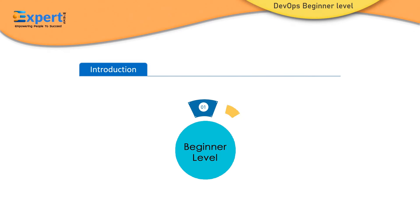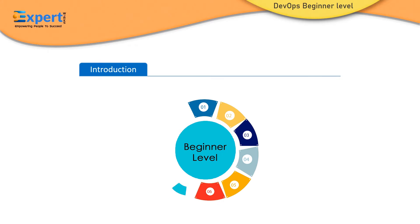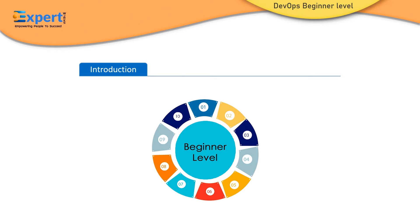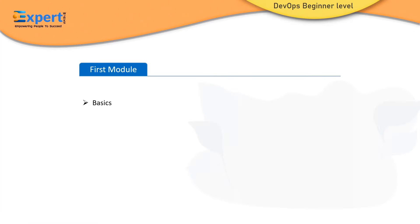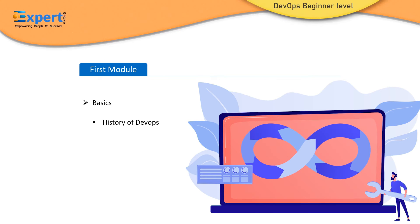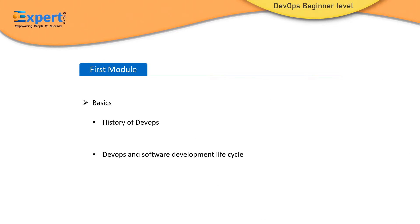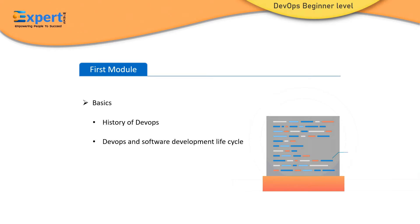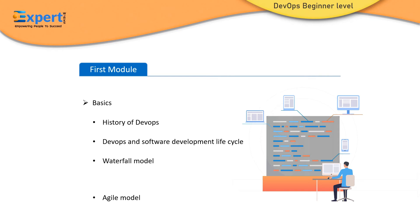This is a beginner-level course on DevOps. The entire course is divided into 10 modules. In the first module, you will learn the basics, history of DevOps, DevOps and software development life cycle, waterfall model, and Agile model.